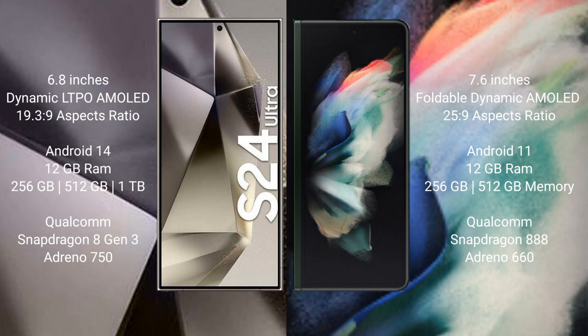The Samsung Galaxy S24 Ultra runs on the Android 14 operating system, while the Samsung Galaxy Z Fold 3 runs on the Android 11 operating system.